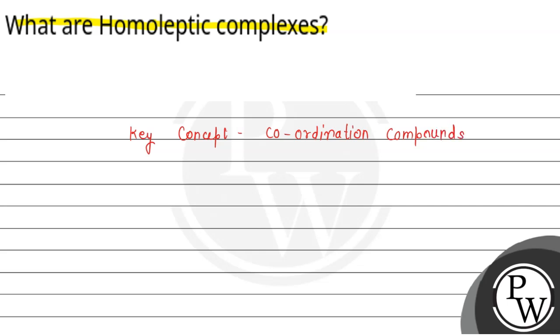Coordination compound is a chemical compound which has a central metal atom and the central metal atom or ions are surrounded by some molecules or ions which are called ligands. It is a chemical compound that has a central metal atom.